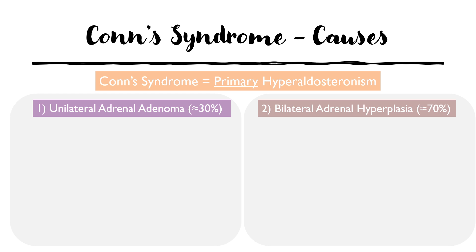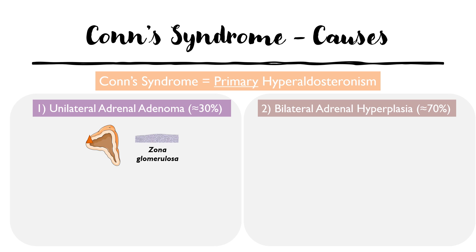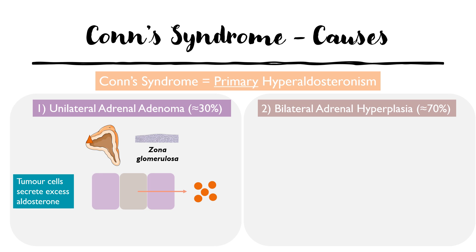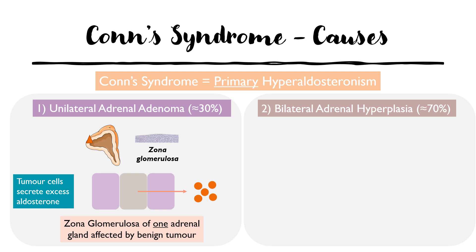Starting with adenomas, there is a benign growth of the adrenal glands, more specifically of the zona glomerulosa — the layer which secretes aldosterone. As a result of this overgrowth, tumour cells begin to secrete more aldosterone into the blood than normal, causing the patient to develop symptoms and signs of Conn's syndrome. In a unilateral adrenal adenoma, generally only one of the adrenal glands is affected.